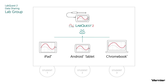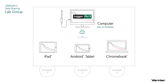LabQuest uses its built-in Wi-Fi to send the data to each of the student devices in real time, while the data is collected from the sensors. One variation on this configuration is to use desktop computers instead of a LabQuest. The same data sharing technology that is built into a LabQuest is also included in our Logger Pro for Windows and Logger Pro for Macintosh programs. As long as the computer is on the same network as the student's devices, the data can be shared in the same way.